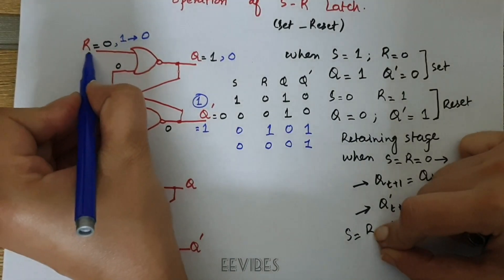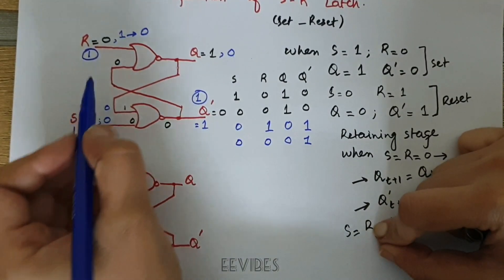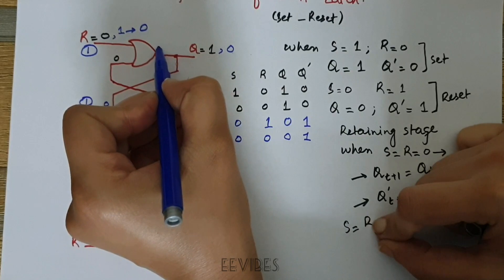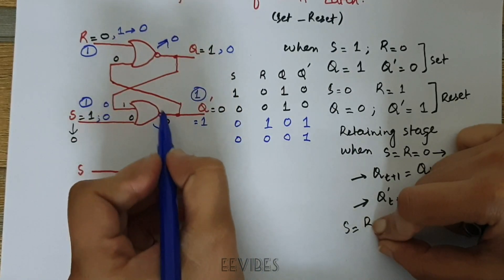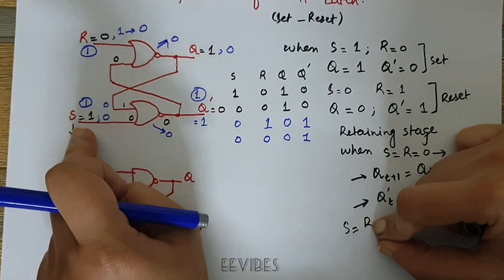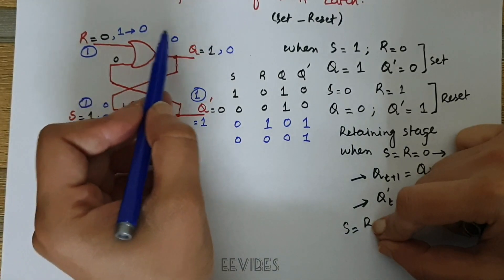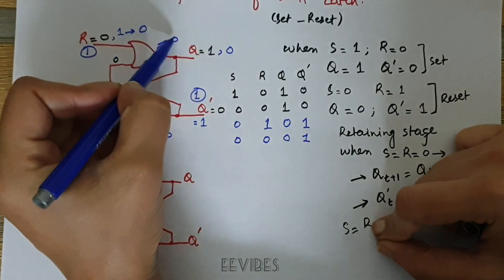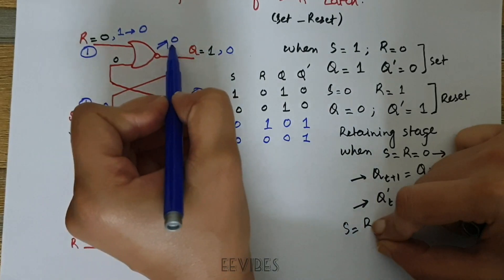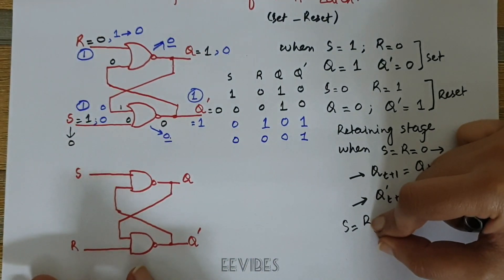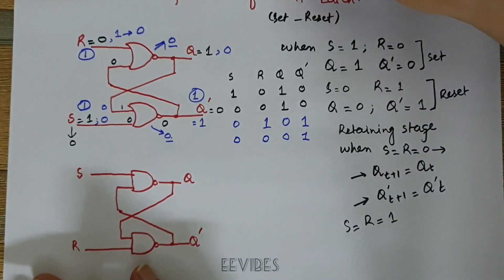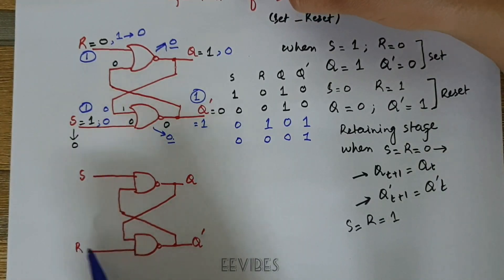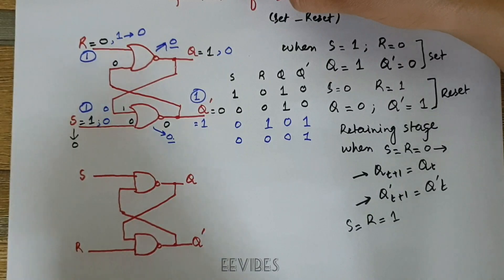Now let's see what happens when we apply both inputs equal to 1. When you make both inputs equal to 1, the outputs of both NOR gates try to switch to 0, because the property of the NOR gate is that any input equal to 1 forces its output to be equal to 0. The outputs produced are not the complement of each other, which is why this input combination is the forbidden state and is avoided in the SR latch. In the next lecture we will quickly review the SR latch using the NAND gate.